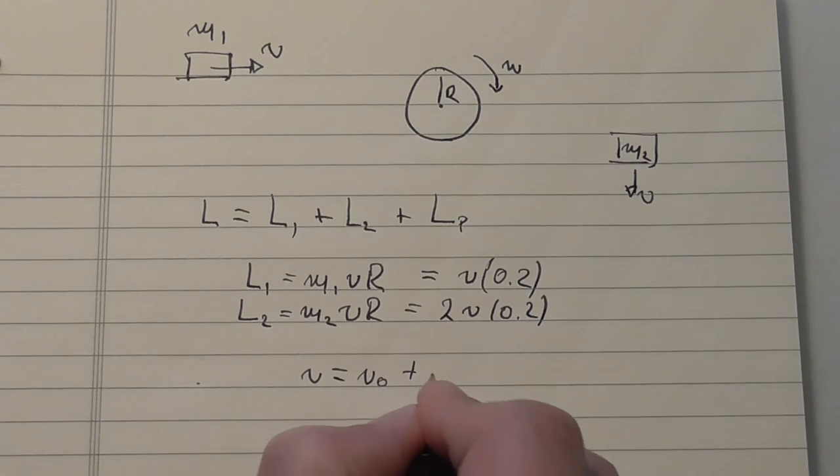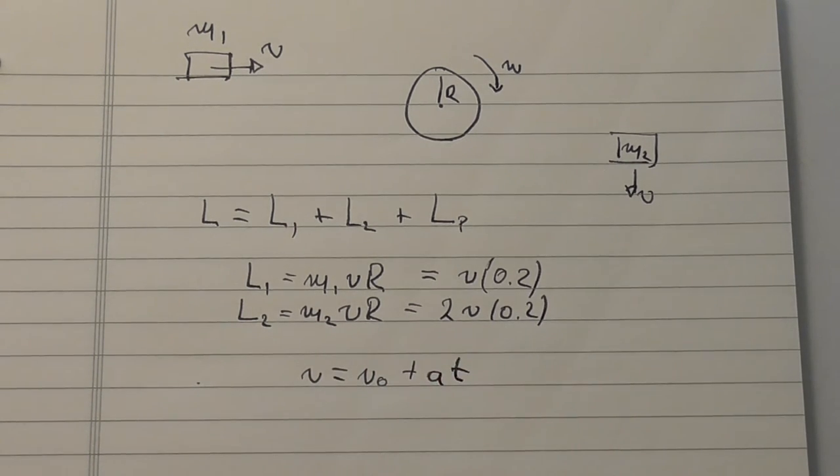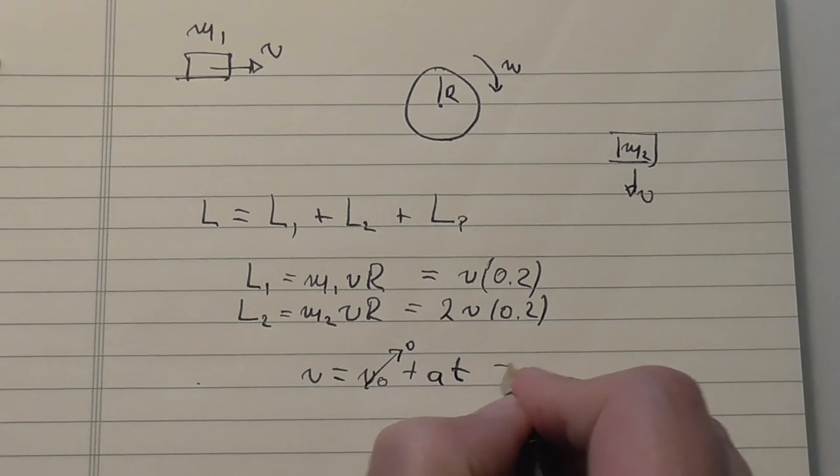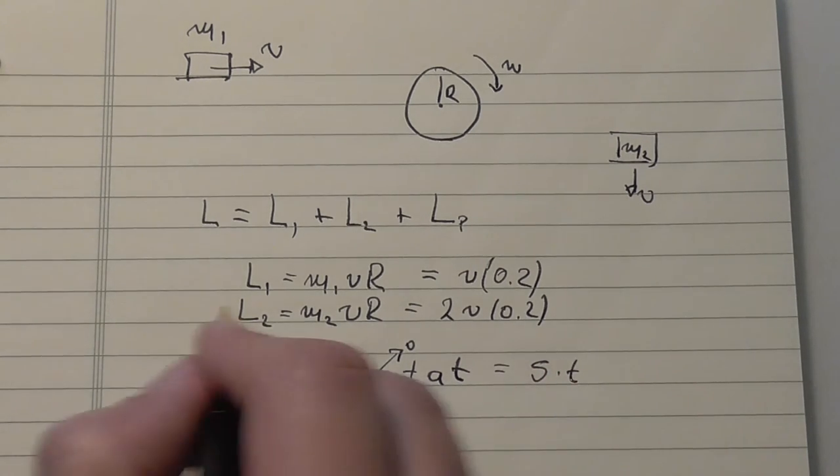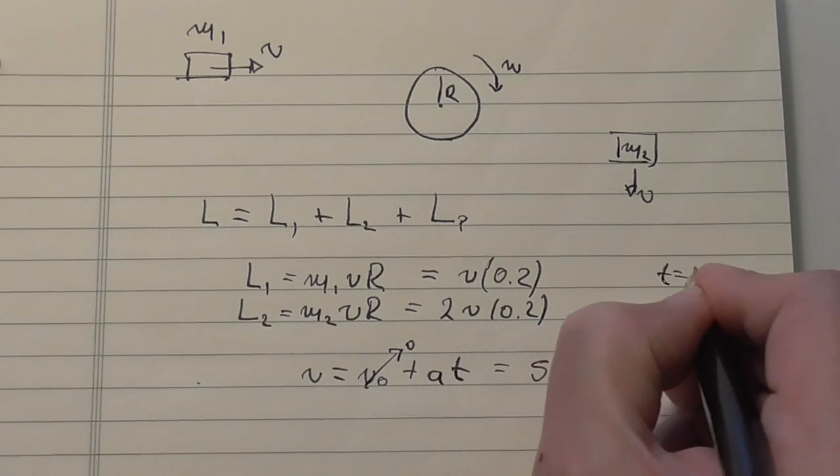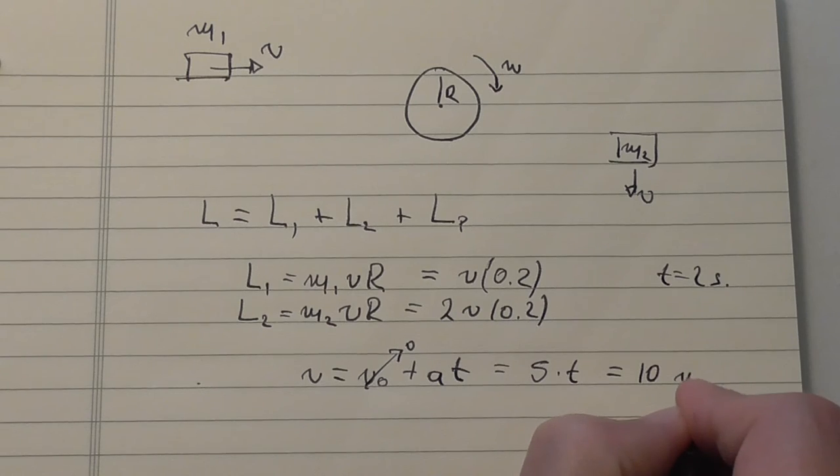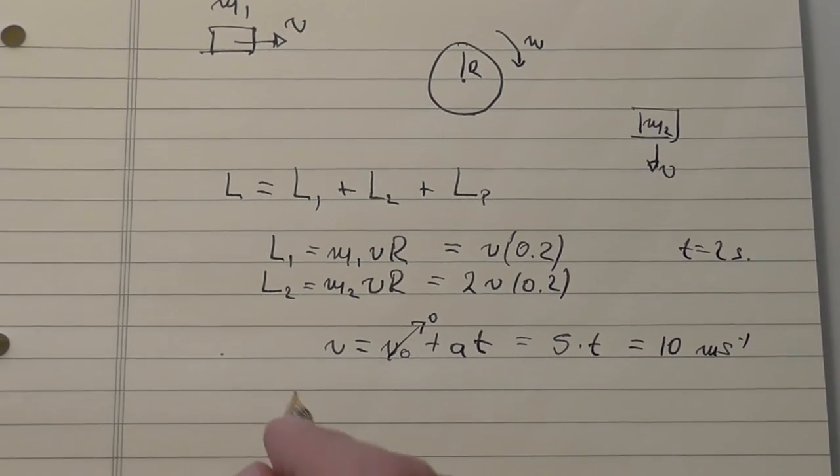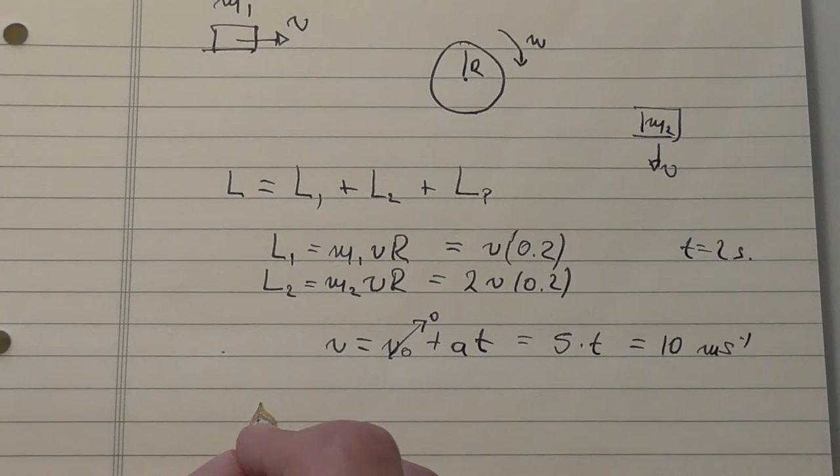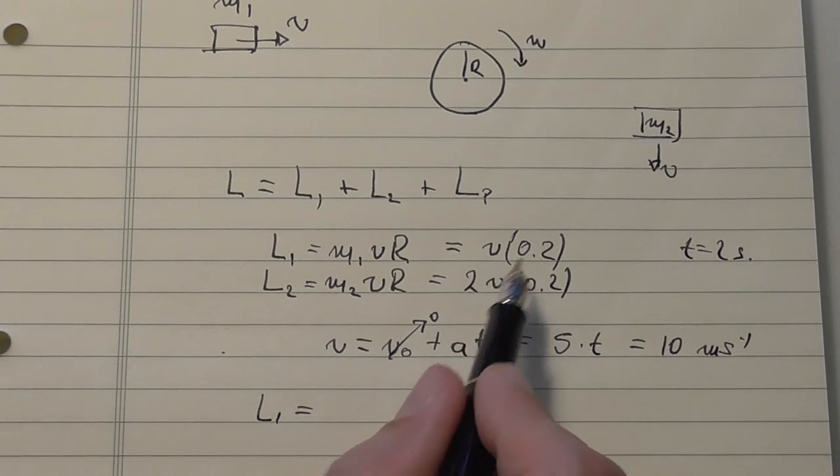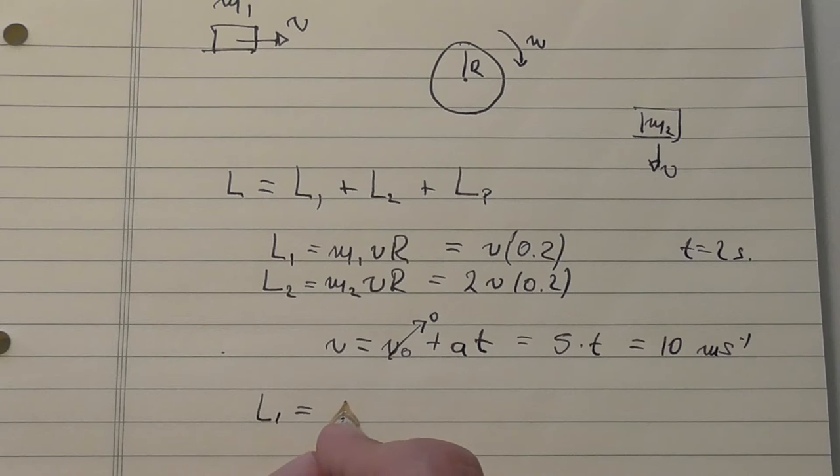So v at time t is v0 plus at, this is simply kinematics with accelerated motion, with v0 being 0. This is 5 times t, and we need to consider this at t is equal to 2 seconds, so this becomes 10 meters per second.